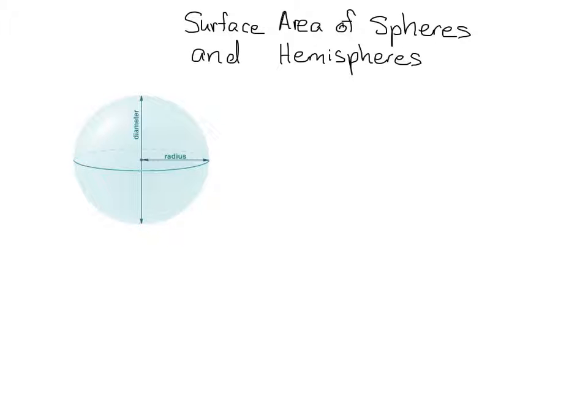But before we start to find the surface area, it's important to note that the radius of a sphere is the line segment that goes from the center of the sphere to any point on the sphere. And the diameter of the sphere goes from one end through the center to the other end.